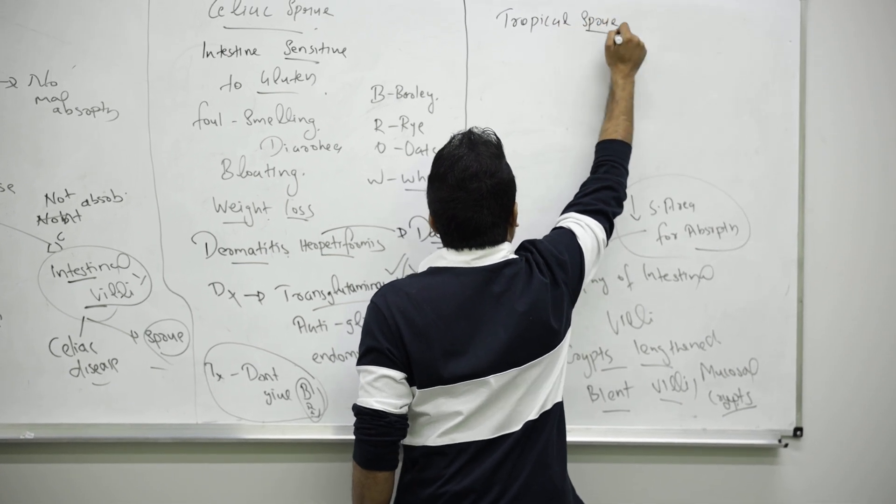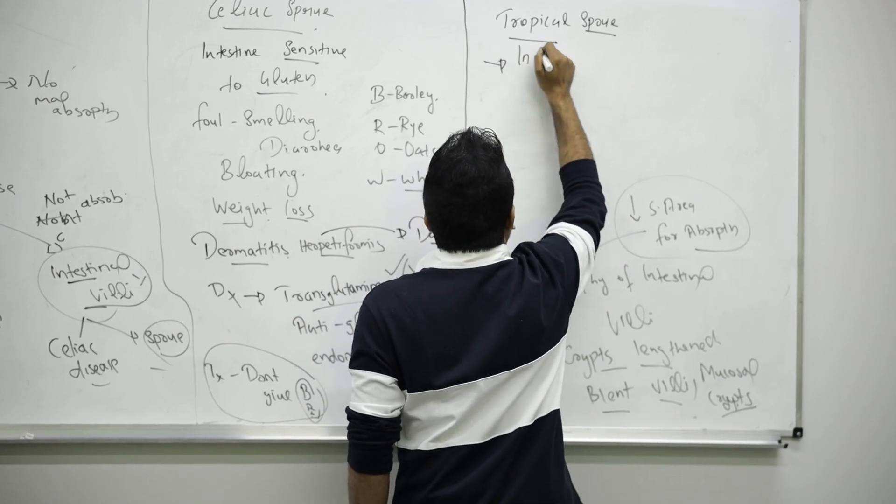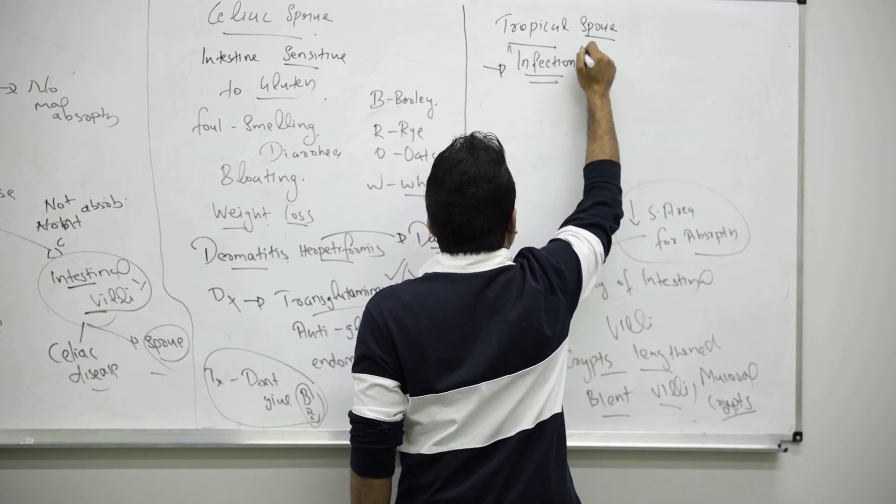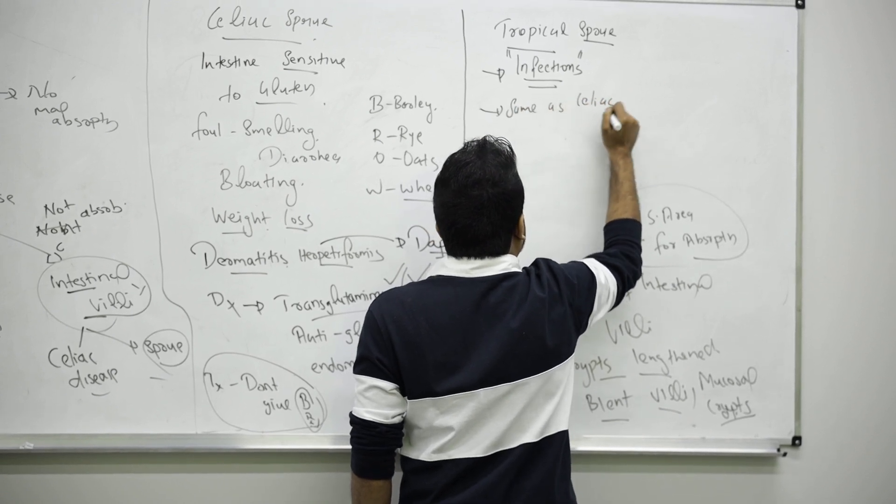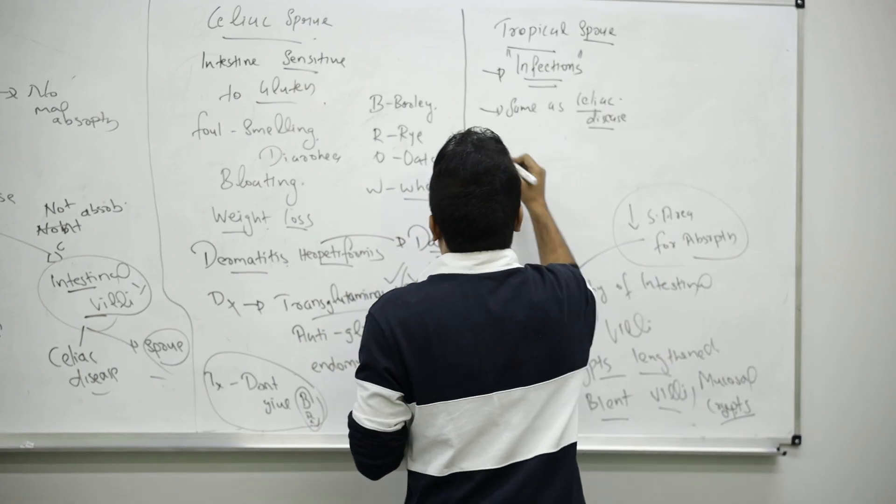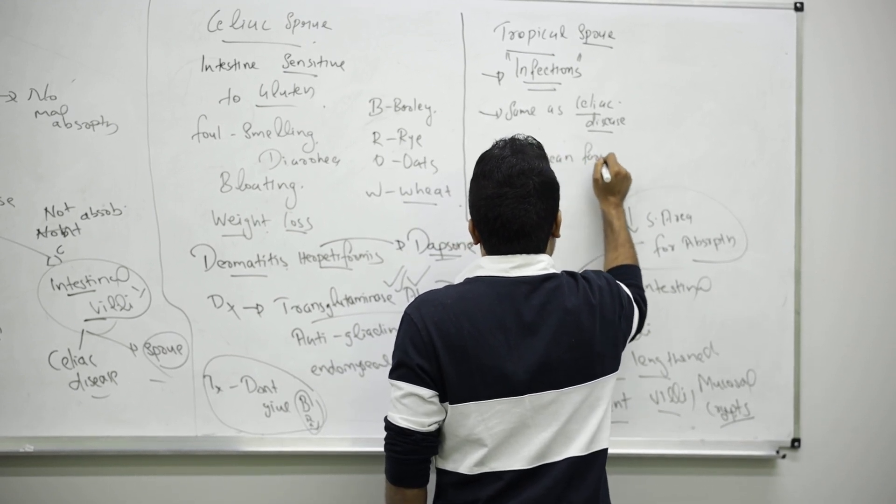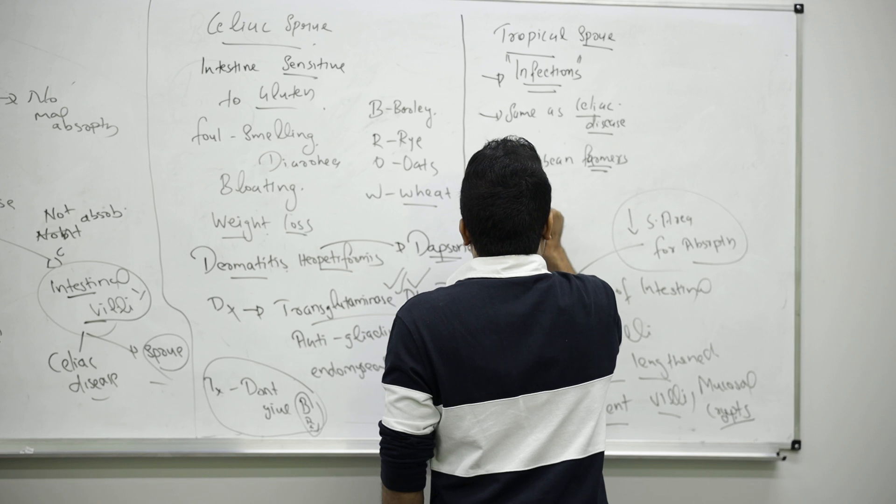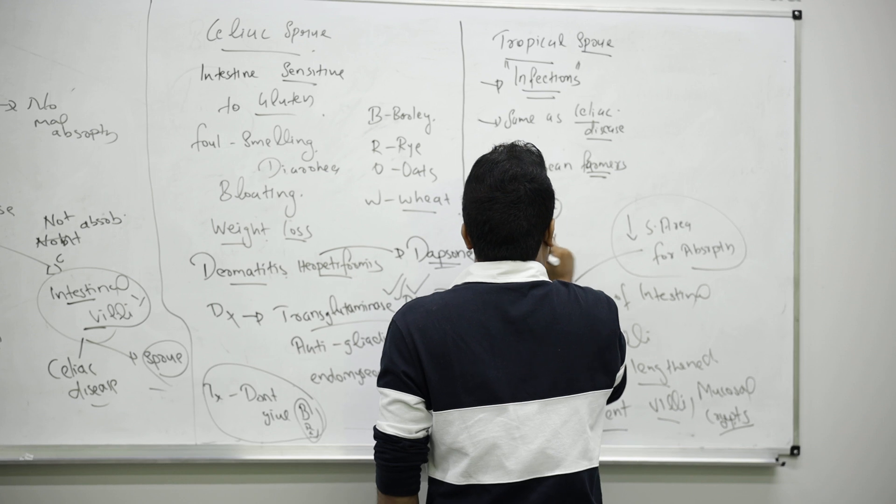Next one, very high tropical sprue, mainly seen due to some infections. Same symptoms as celiac, like commonly seen in Caribbean area, Caribbean farmers. They are PAS negative.